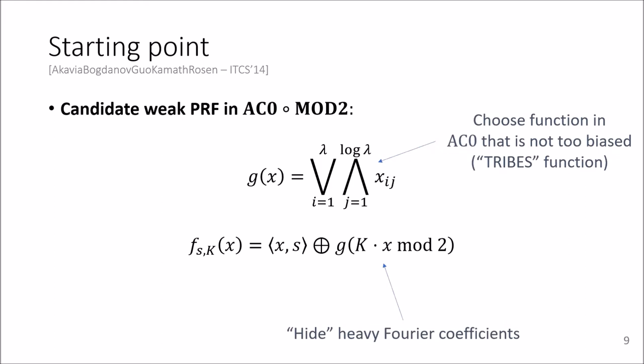And then K is used to hide the heavy Fourier coefficients that we know G has because of the result of Linial Mansour and Nisan. And finally, the bias is removed to get from a constant bias weak PRF to a random weak PRF by adding a parity of X with a part of this, a fresh part of the secret key S.